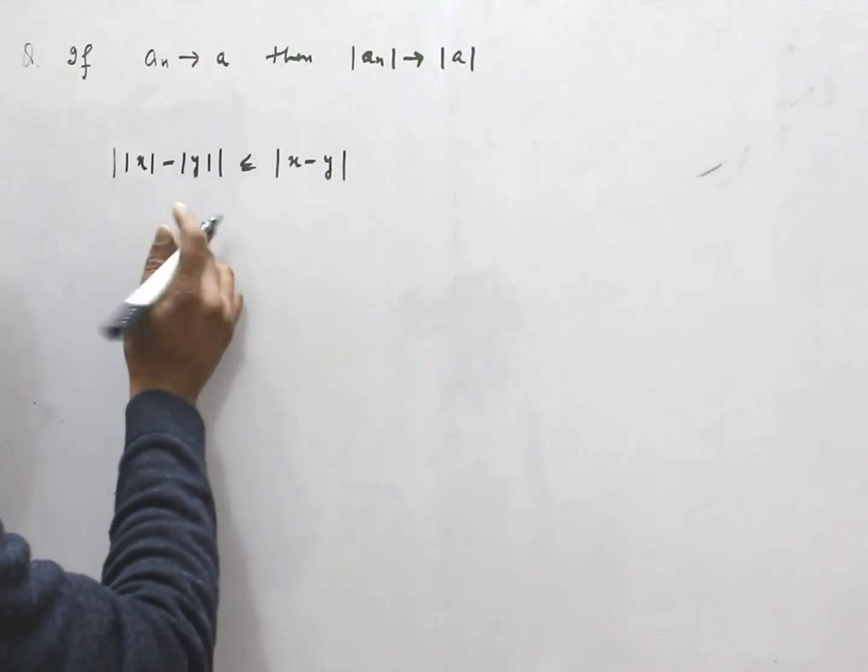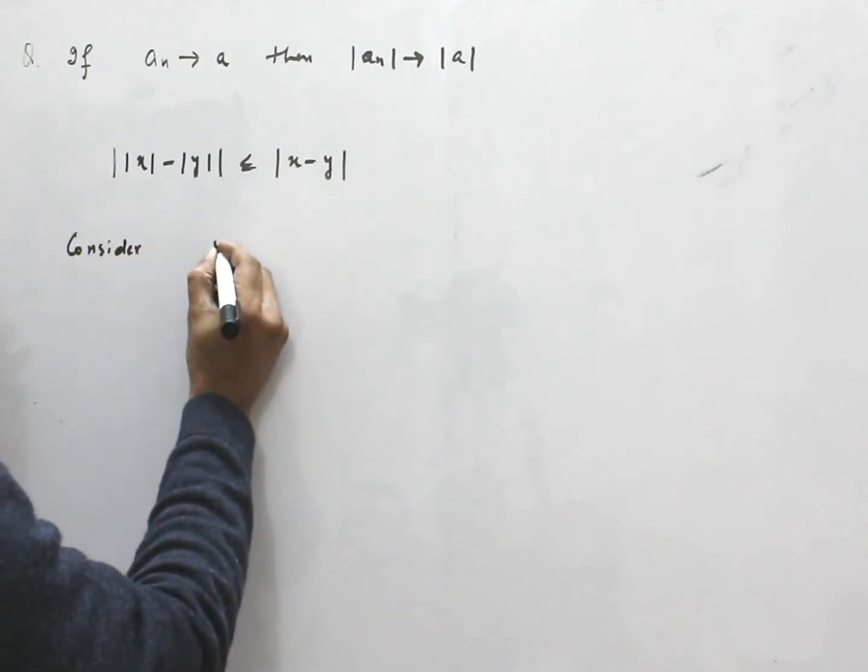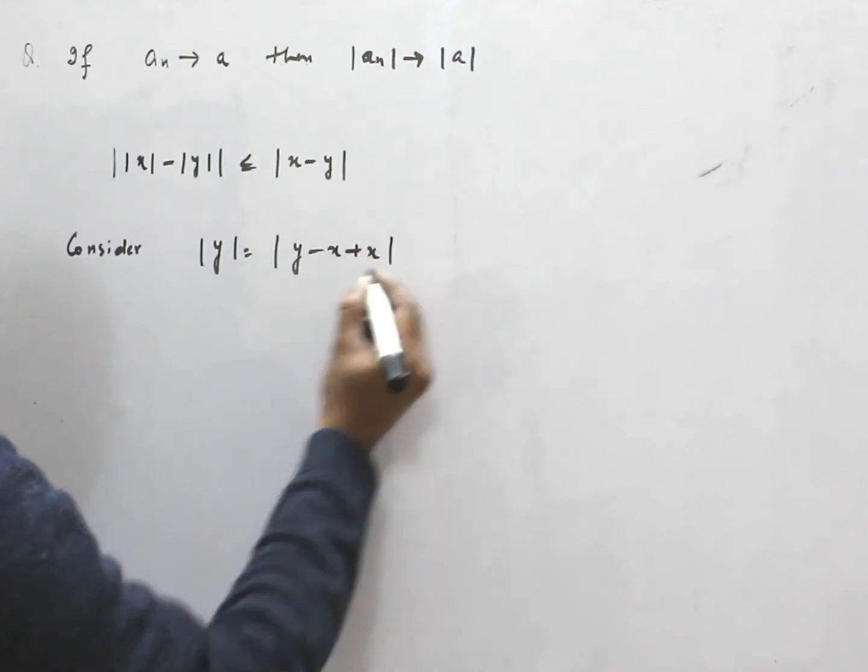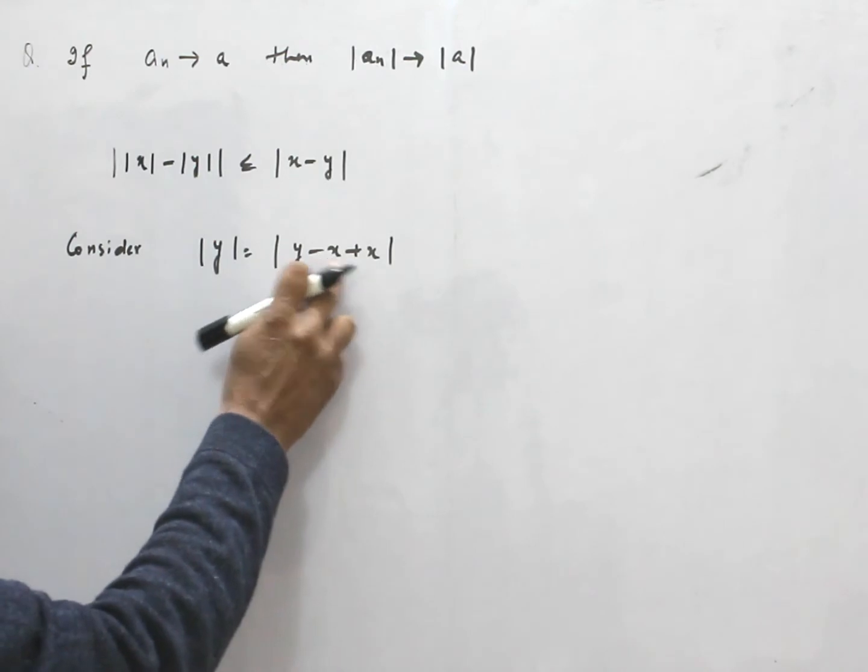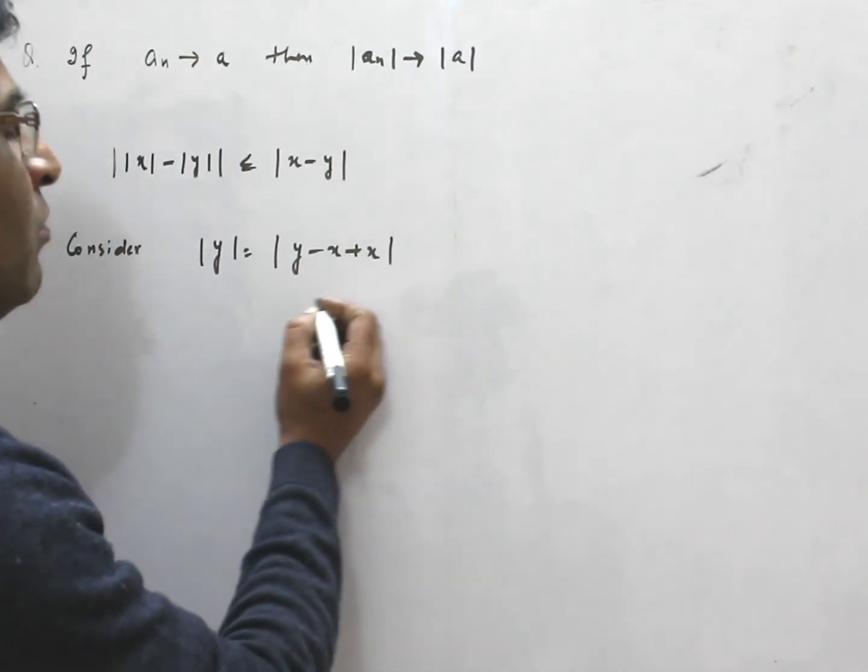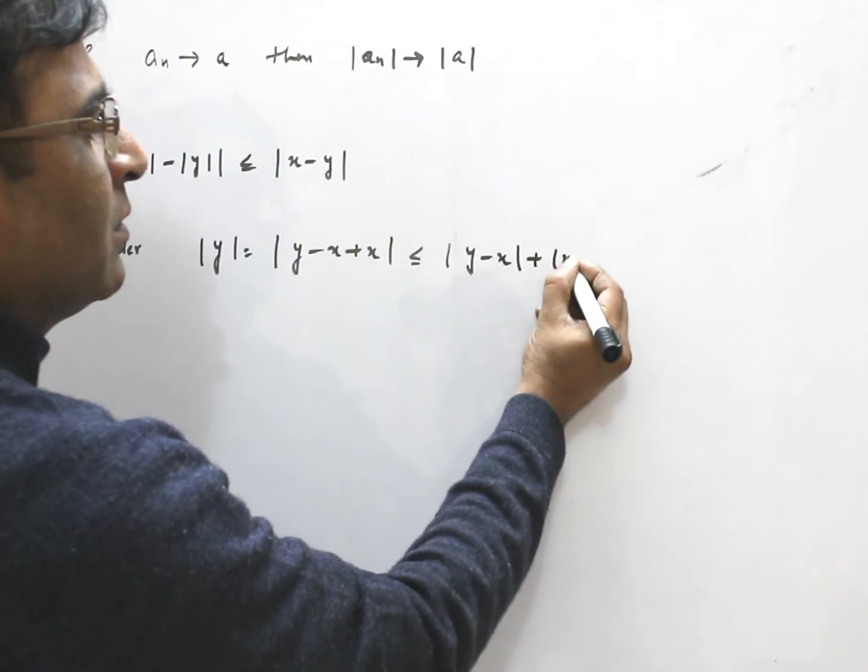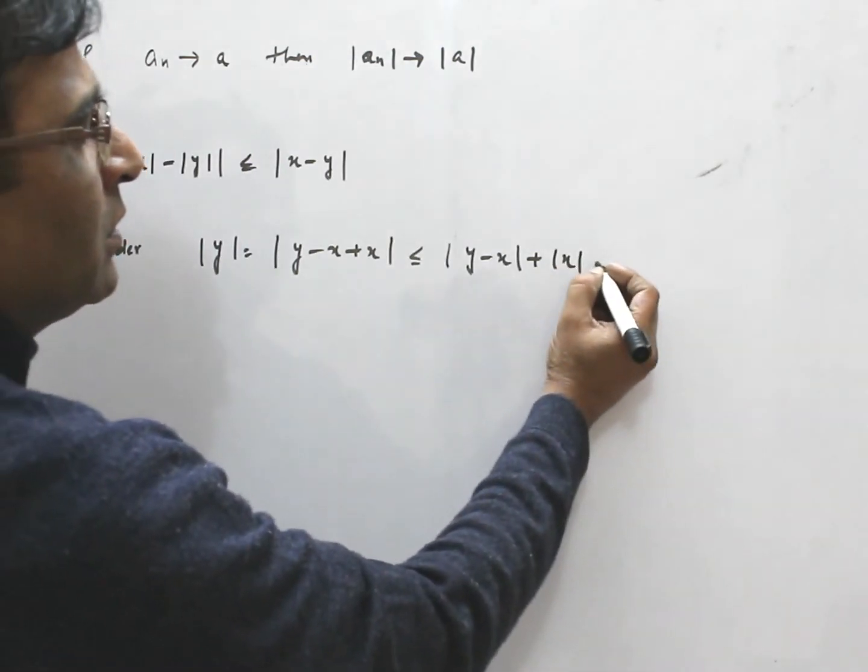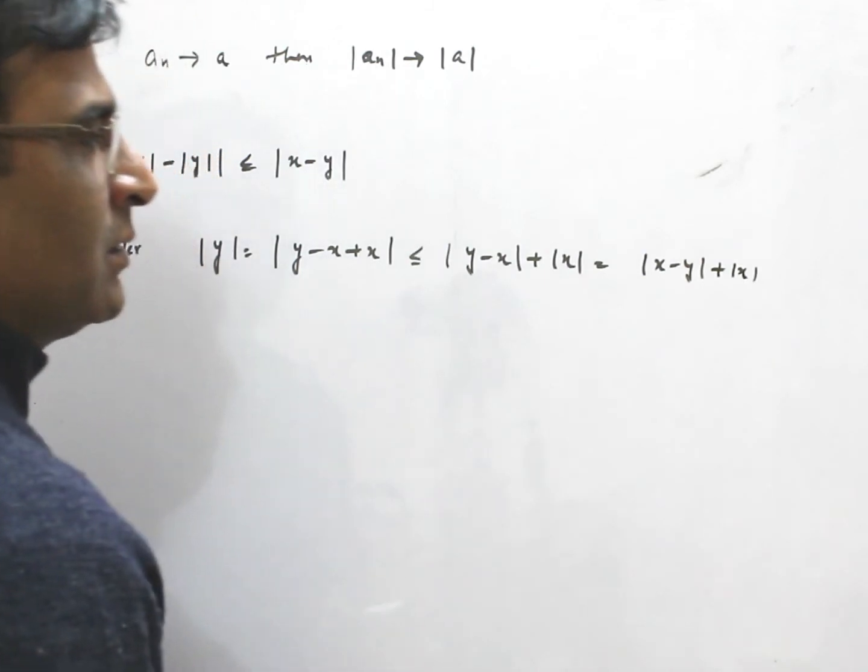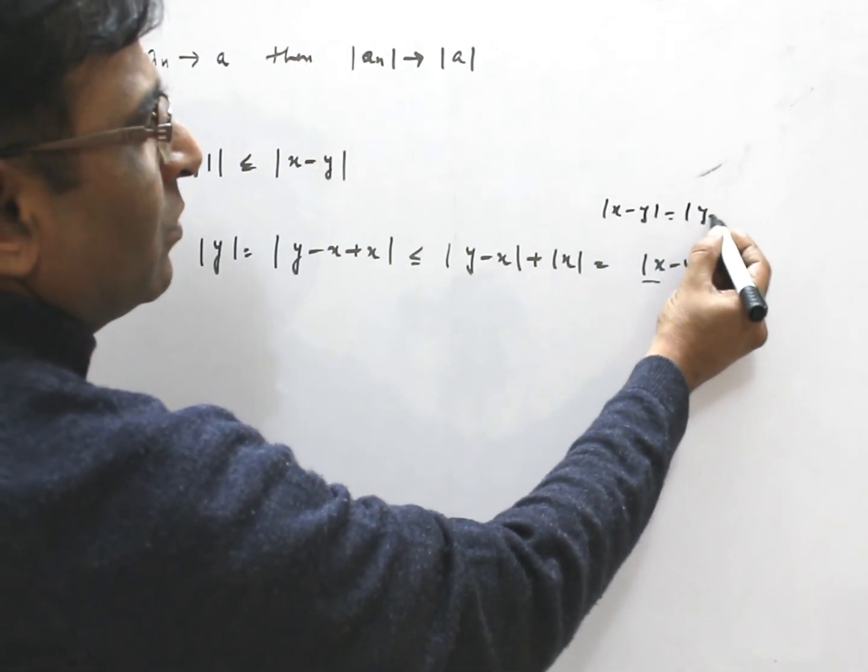So, this result, consider y, which I can write y minus x plus x. It will not make any difference because this x will cancel. Now, by triangle inequality, I can write this y minus x plus this, or this is equal to x minus y plus x. Why this? Because x minus y is equal to y minus x.